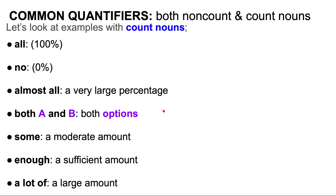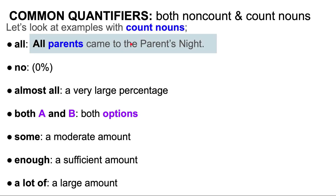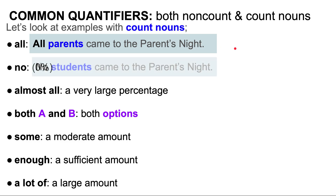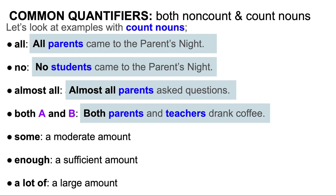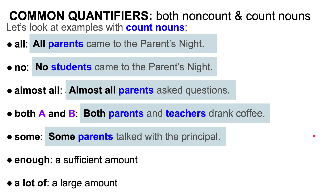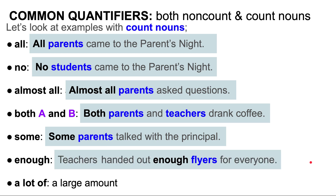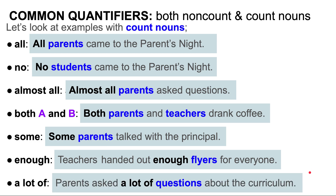Let's look at examples with count nouns. All: all parents came to the parents' night. No: no students came to the parents' night. Almost all: almost all parents asked questions. Both A and B: both parents and teachers drank coffee. Some: some parents talked with the principal. Enough: teachers handed out enough flyers for everyone. And a lot of: parents asked a lot of questions.